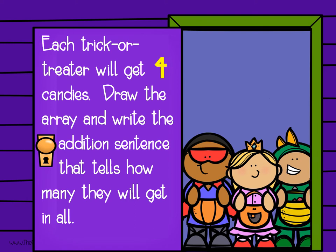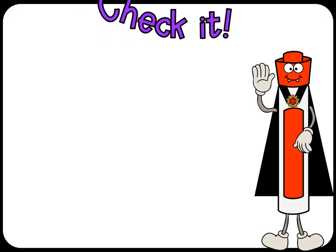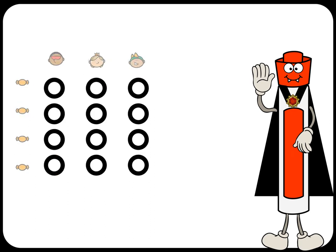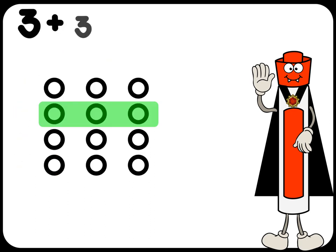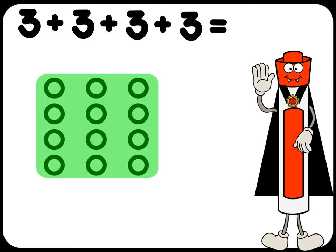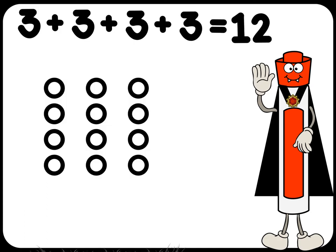Each trick-or-treater will get four candies. Draw the array and write the addition sentence that tells how many they will get in all. Check it: three trick-or-treaters have four candies each — three plus three plus three plus three equals 12. Erase it.